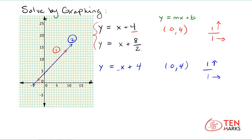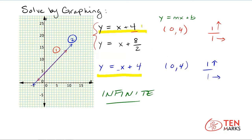Let's draw this line in blue. Notice how the two lines completely overlap each other, which means they share every single point. Any point that falls on line one, line two will also have. So this system of equations has infinite solutions.